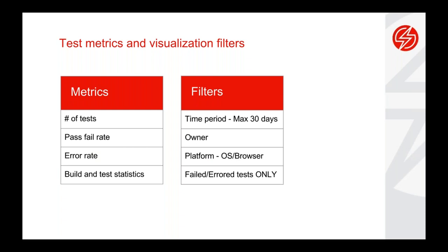Moving on to test metrics and filters. We have four main metrics within our analytics trends dashboard. Number of tests, to give you a good understanding of your test coverage across the last few days. Success and failure rate. Error rate — errors are basically tests that did not complete running, which could be due to any reason: a Sauce infrastructure issue, a user issue, or incorrect desired capabilities. And build and test statistics — you can use any of the metrics graphs to narrow down on an area and then jump into the build and test table to get into the actual test itself. Those are the four metrics available today.